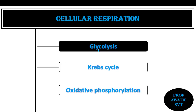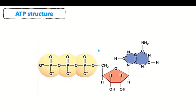Glycolysis happens only by chemical reaction to produce energy, which is the main goal of cellular respiration. Before getting into the glycolysis reaction, let me introduce the sort of energy that our cells are using, which is the molecule of ATP. ATP refers to the energy store of the cell. This is the molecular structure of ATP.